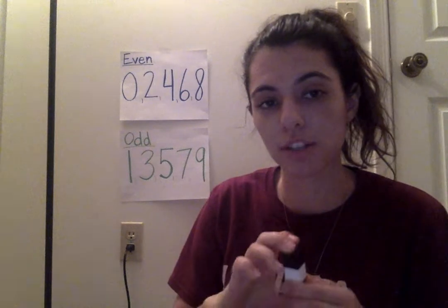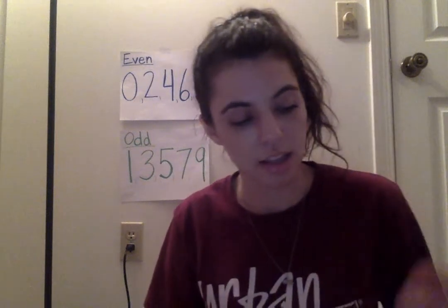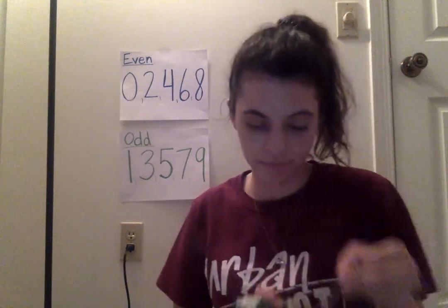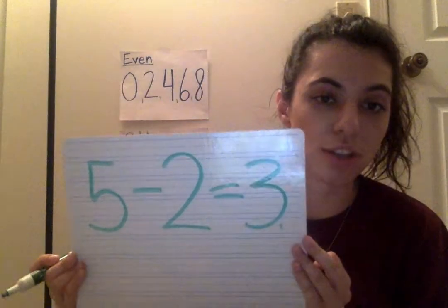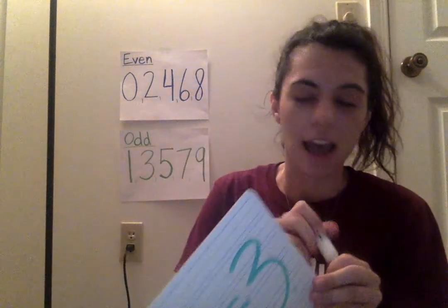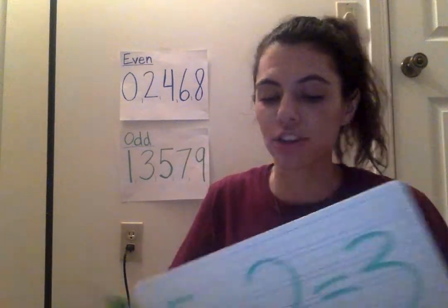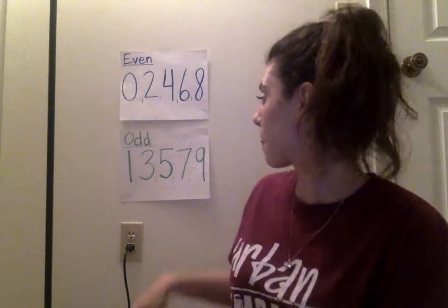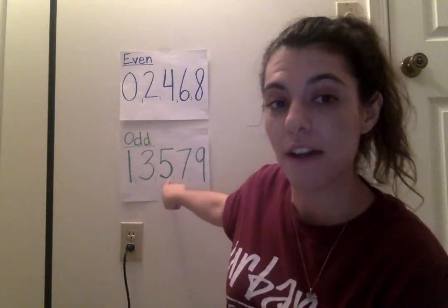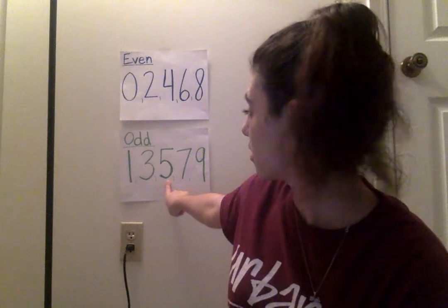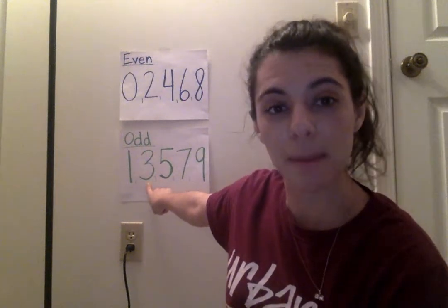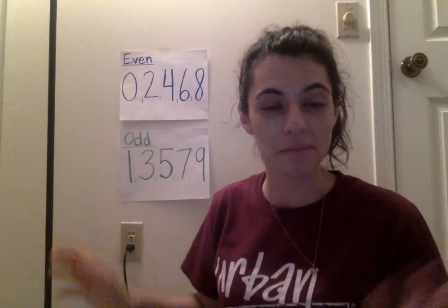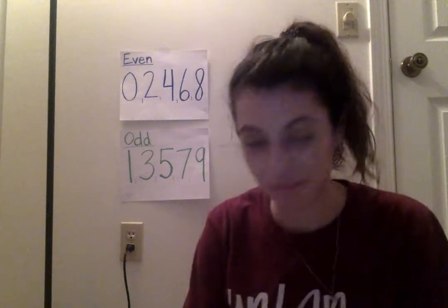Now if I wanted to do this a shorter way to figure out 5 minus 2, I would just look at my chart. We said 3 was our answer — let's look at this. We started on 5, we look at the number right before it. Was that our answer? It was — 3 was our answer.